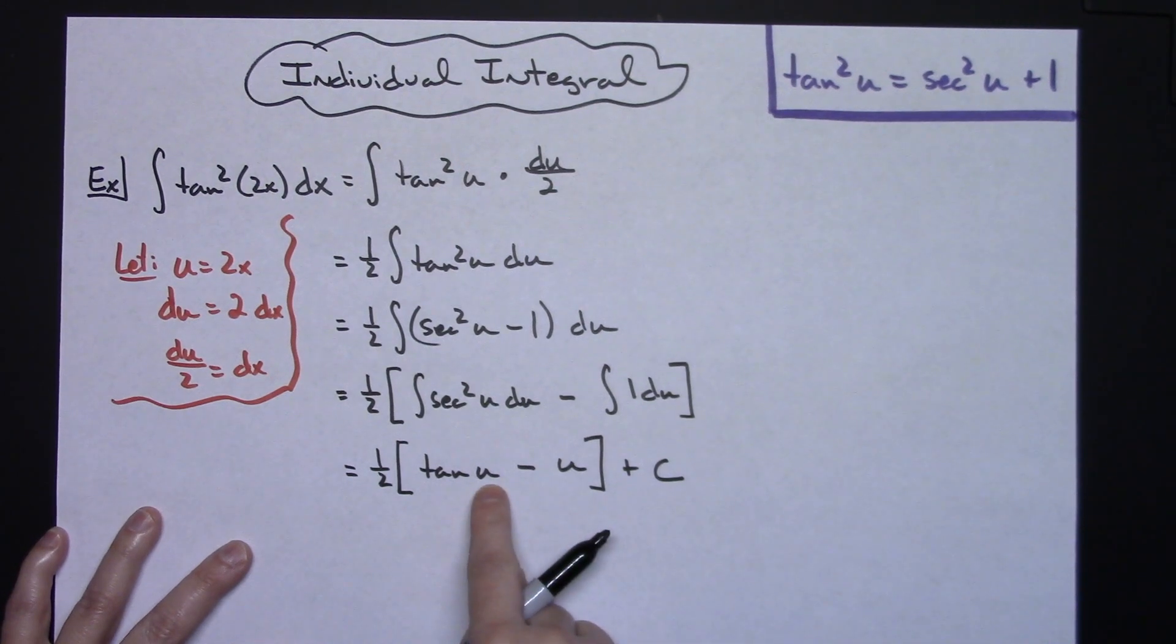The last step would be to replace that u with 2x. And if you wanted to go ahead and distribute the one-half all in the same step, you could. So one-half tangent, replace u with 2x.